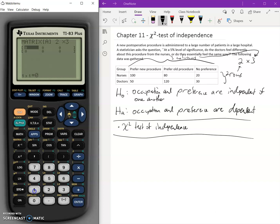We enter our data in here. We have 100, we have 80, we have 20, we have 50, 120, and 30. So that's our numbers entered into our matrix.